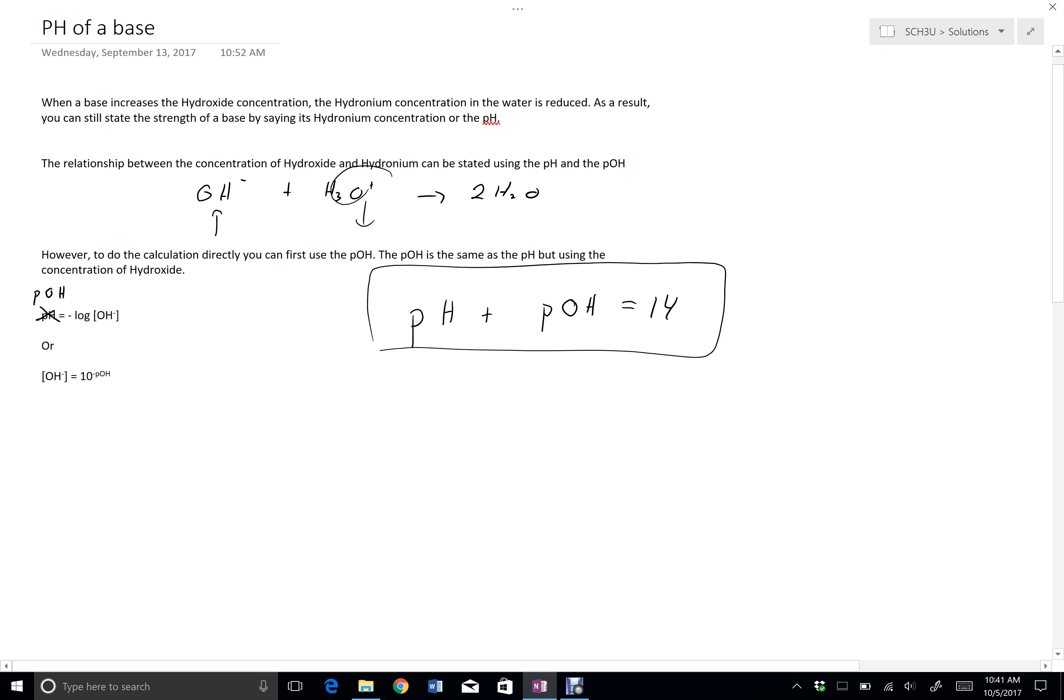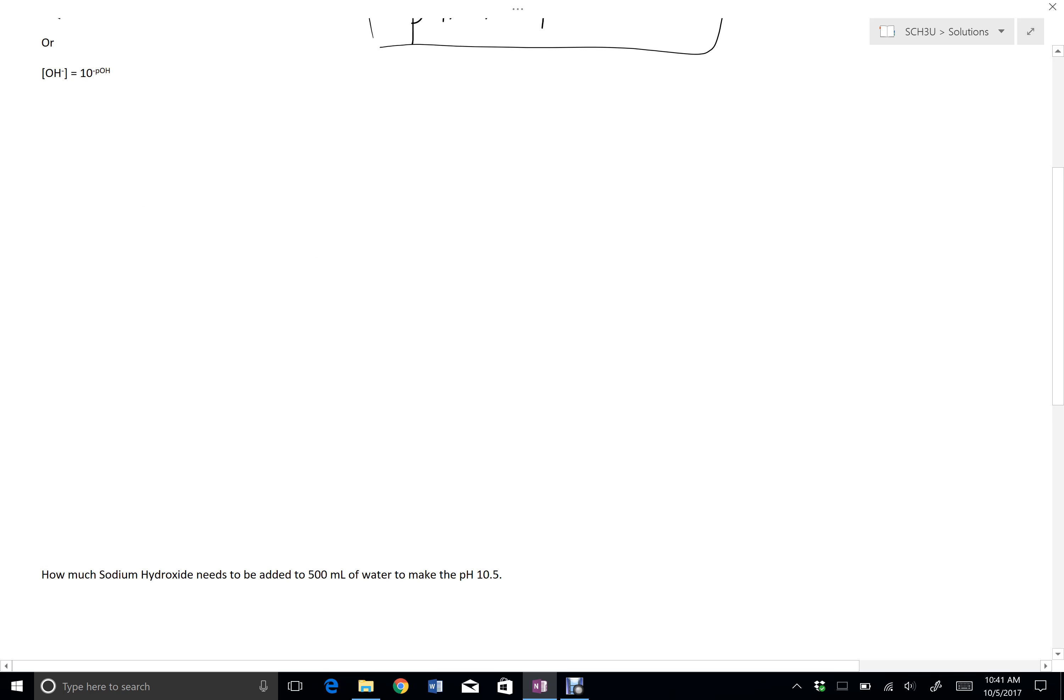So let's look at a couple examples and see how to do this. How much sodium hydroxide needs to be added to 500 milliliters of water to make the pH 10.5? Sodium hydroxide is a base.